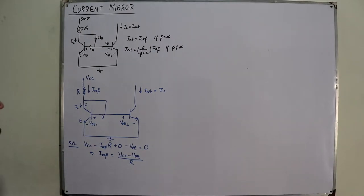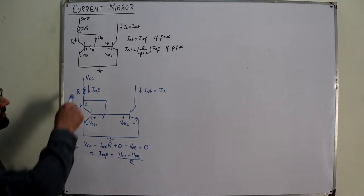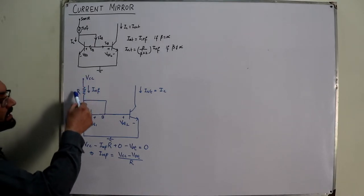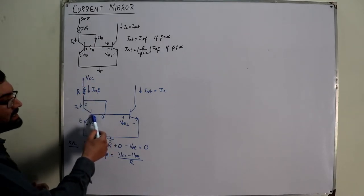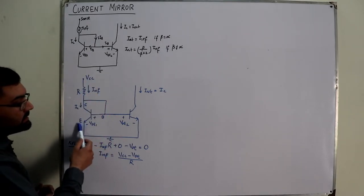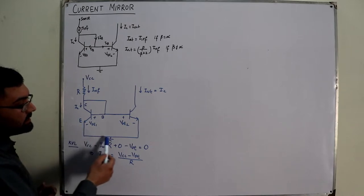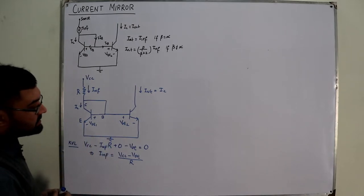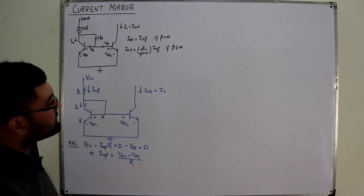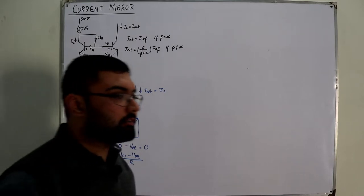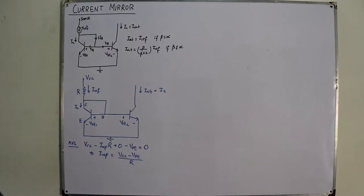For this to be in active mode, note that the positive VCC is connected to the positive terminal and the circuit goes to the minus terminal — so this transistor is indeed in the active region of operation.